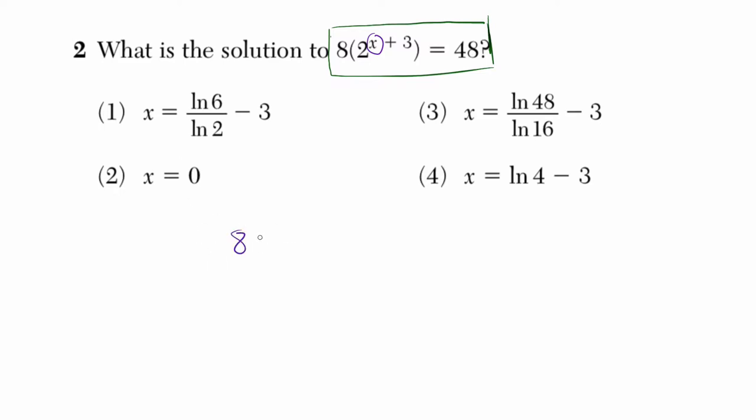So we've got 8 times 2 to the x plus 3, and that's going to equal 48. All right, so what I want to do is isolate this 2 to the power of x plus 3. So I'm going to do that by dividing both sides by 8. I want to get rid of that coefficient. It's going to make it easier to work with. And then 48 divided by 8 is 6.